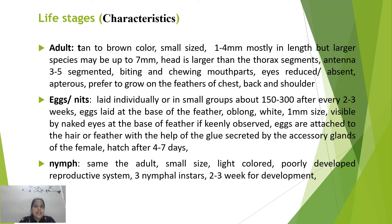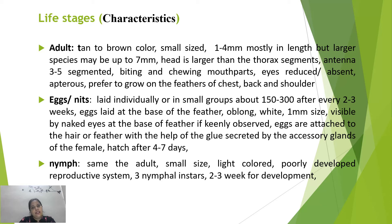Chewing lice show incomplete metamorphosis with only three stages: adult, egg, and nymph. Adults are tan to brown, mostly 4 mm in length, though larger species may reach 7 mm. The head is larger than the thoracic segments — an identifying character. Antennae are three to five segmented with biting and chewing mouthparts. Eyes are reduced or absent, and wings are absent. They prefer to grow on the feathers of the chest, back, and shoulder of the host. Females lay eggs called nits in groups every two to three weeks.